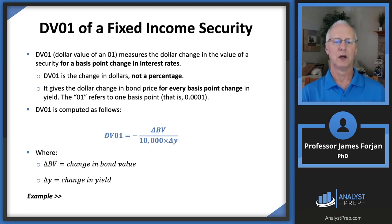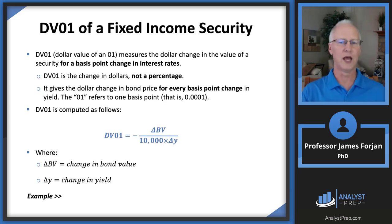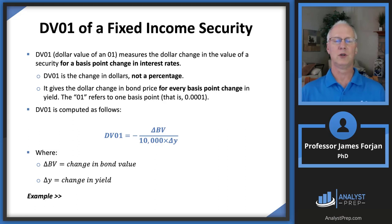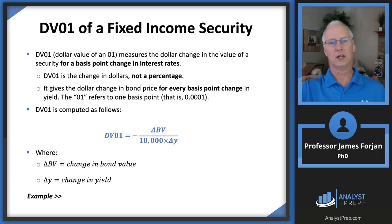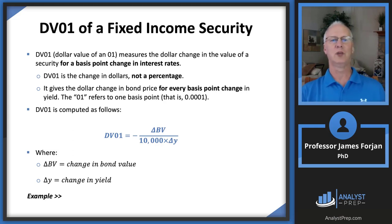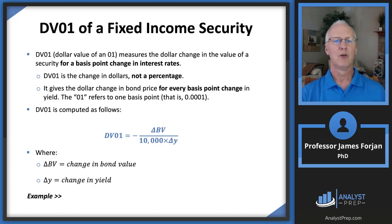Now let's get into the meat of the chapter: interest rate risk. We know that if interest rates go up, our bond price goes down — not good news. If interest rates go down, price goes up. What we need is a measurement of how much that bond is going to change in value when interest rates change. The DV01 tells us the dollar change in value of a fixed income security for a one basis point change in interest rates.